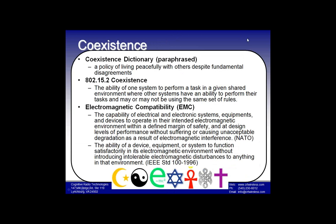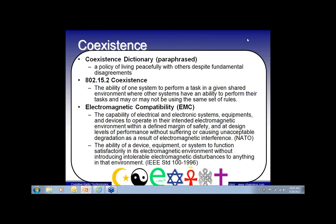What do I mean by coexistence? From the dictionary, it's a policy of living peacefully with others despite fundamental disagreements. The .15.2 standard from 2003 defines it as the ability of one system to perform a task in a given shared environment where other systems also perform their tasks, possibly using different rules. The need for coexistence between unlicensed systems well predates TV white space, so many of the same problems and techniques carry over.